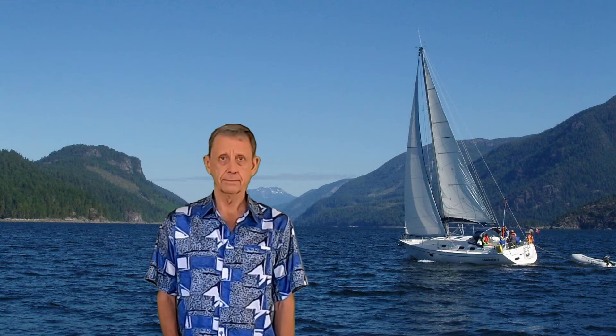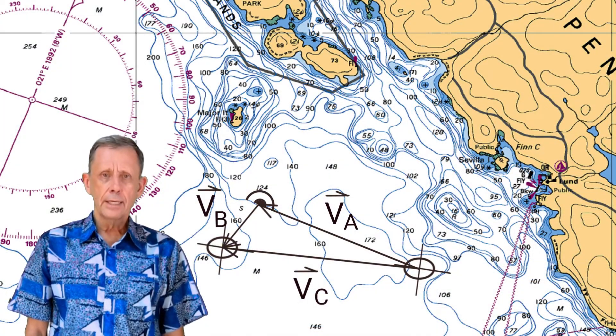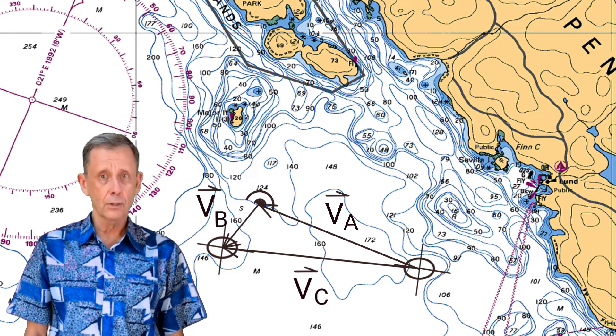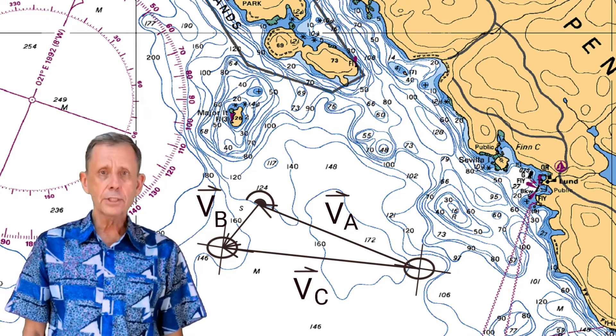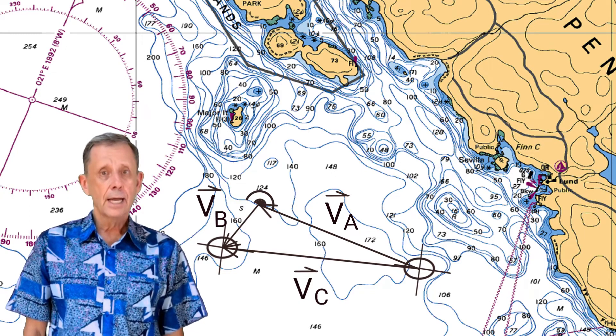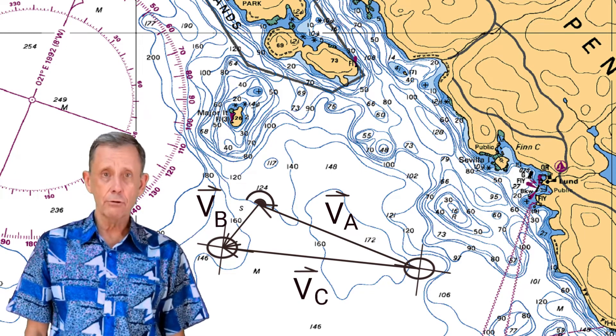My first series of lessons are on the physics of sailing because if we understand the physics of what we're doing we'll understand how and why we trim our sails the way we do and how to handle our boat properly. In this first lesson I'm not actually going to talk about sailing at all. In this lesson I want to introduce a subject that I'll be using in these lessons, and that is how to add and subtract arrows.